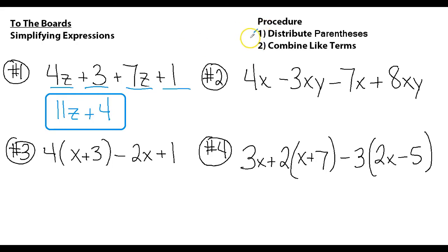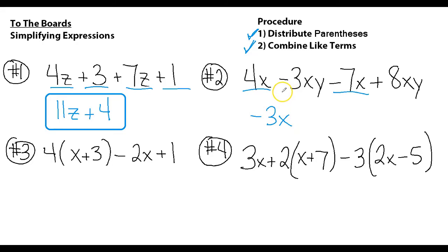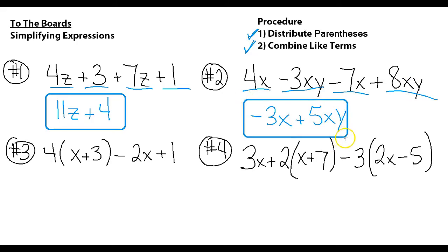Number two also has no parentheses, so we just combine like terms. 4x minus 7x — if I had four x-rays minus seven x-rays, that gives us negative 3x. Then negative 3xy plus 8xy gives us 5xy. That's our answer for number two: negative 3x + 5xy.